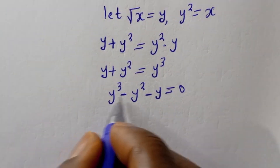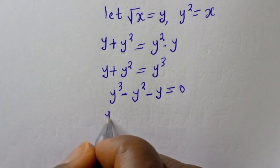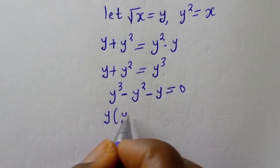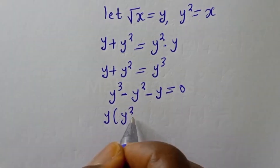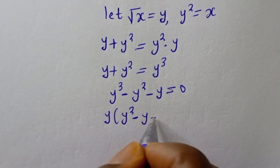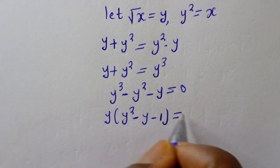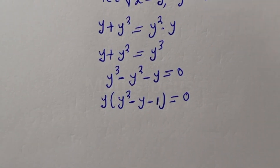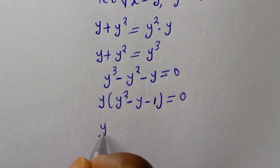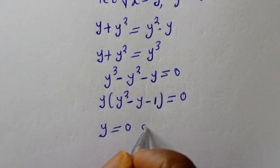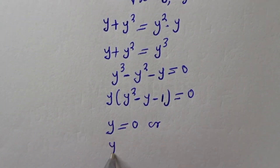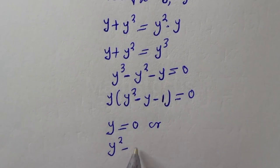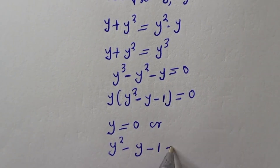We can factor out y: y times the bracket y squared minus y minus 1 is equal to zero.